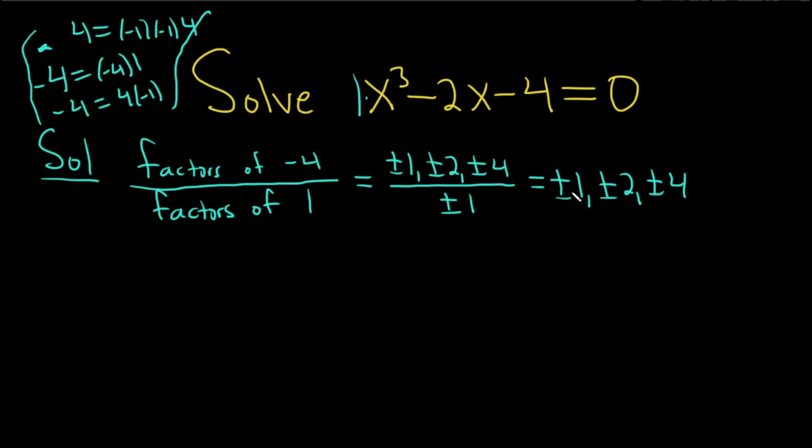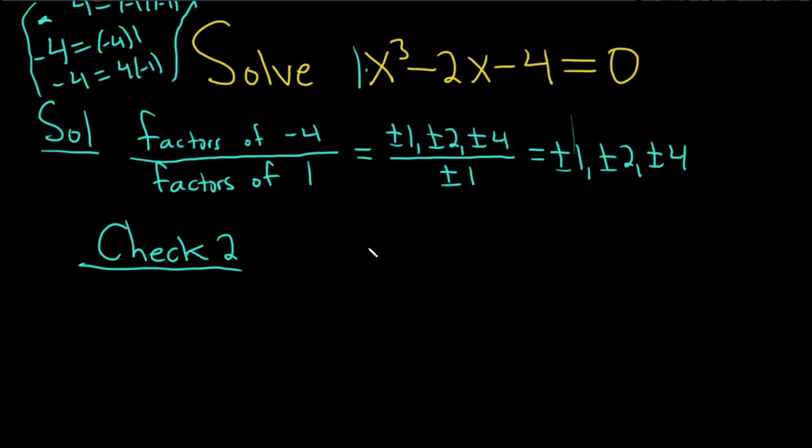So now that we have these, what we do is we check using synthetic division. You can also mentally check. For example, if we plug in 1 here, we'll get 1 minus 2 minus 4, that's not going to work. Negative 1 will give us negative 1 plus 2 minus 4, it's not going to work either. 2 might work. Let's check 2. I have a hunch that 2 or negative 2 will work because there's no way if you plug in 1 or negative 1 that this is going to work.